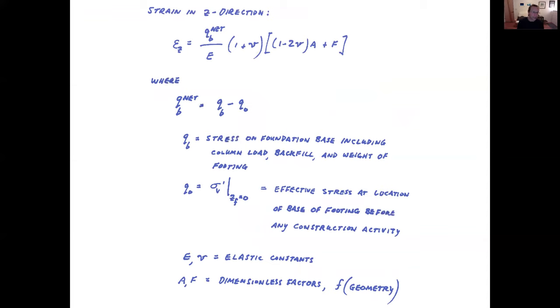The strain in the z direction is calculated rather fundamentally with the equation presented here, and this is representing stress levels. I'm presenting here a stress on the foundation base, including the column load, the backfill, and the weight of the footing called Q sub B. Q sub knot, which we've used in the Terzaghi and basic bearing capacity equations, is the effective stress at zf equals zero at a depth of zero. That indicates depth below the footing of zero. This terminology here is a bit of a mathematical symbol, specialized symbol. Salgado is using this a lot in his textbook and notation for this.